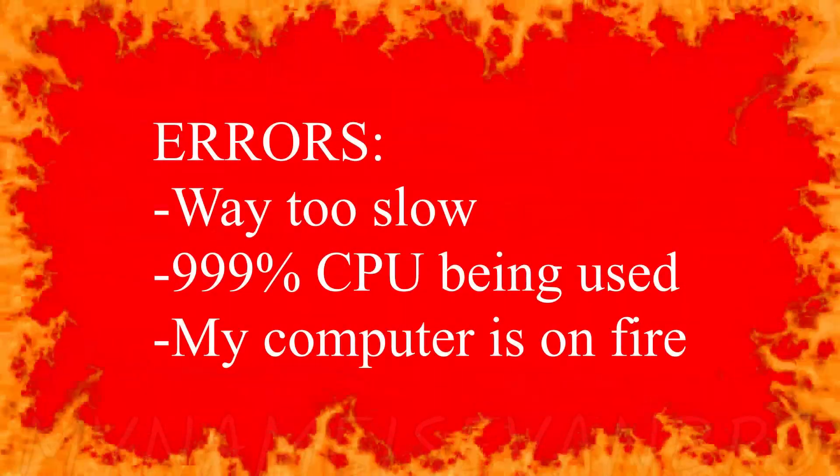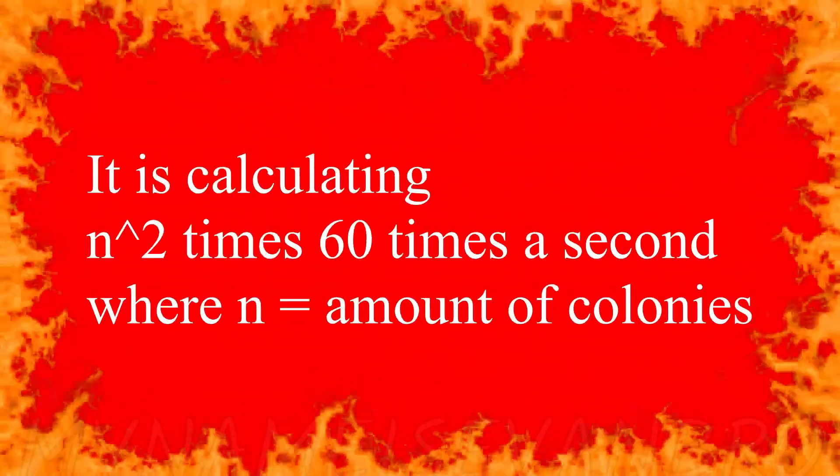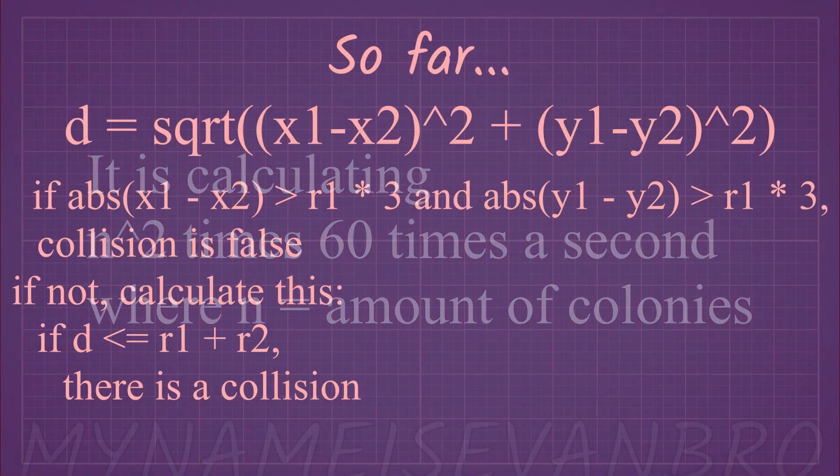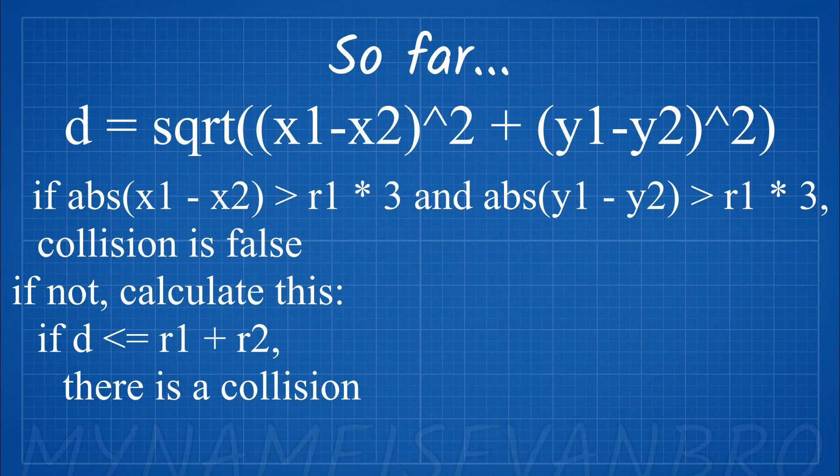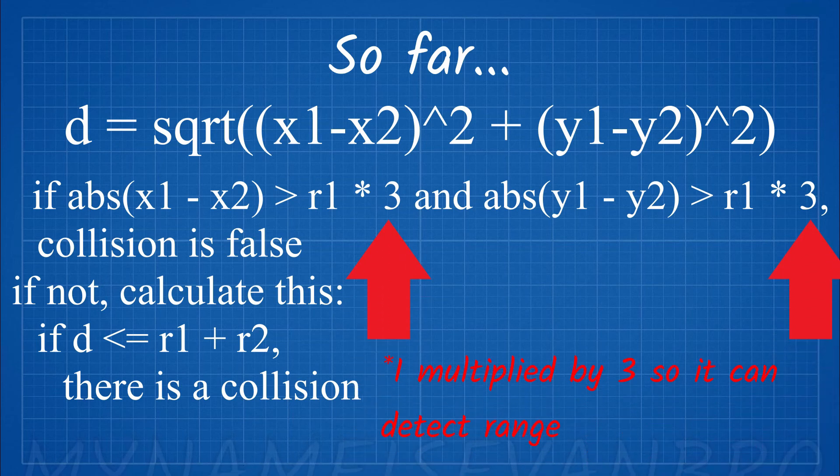This works, but the program will not work very well as doing heavy calculations the number of times as the number of colonists squared is a lot of computing. I made it where if the difference between the y1 or y2 of a circle is greater than three times its radius, it will not check the collision because there isn't any, same for x. The reason why I multiplied it by three is that it extends its range—its radius times three.